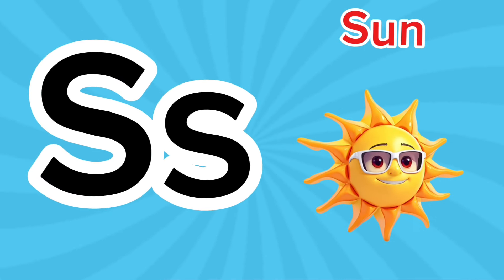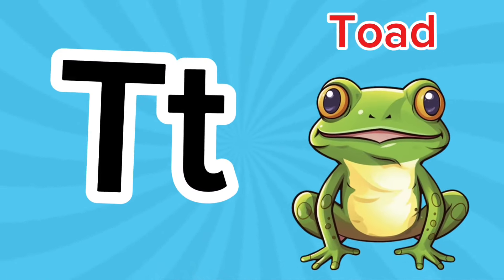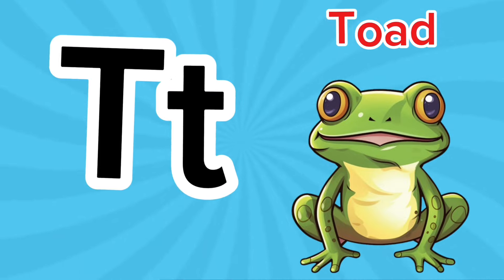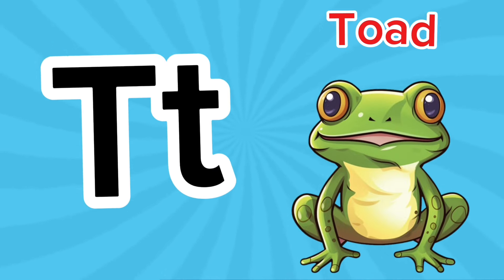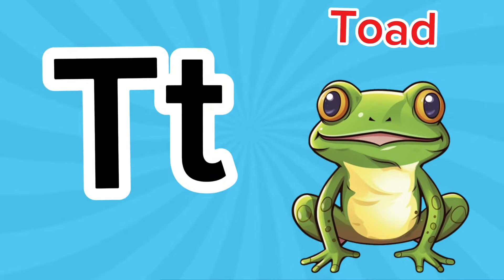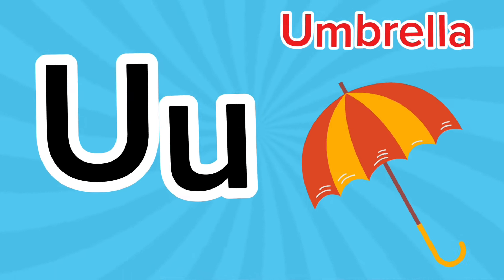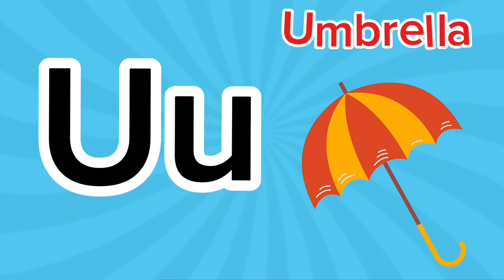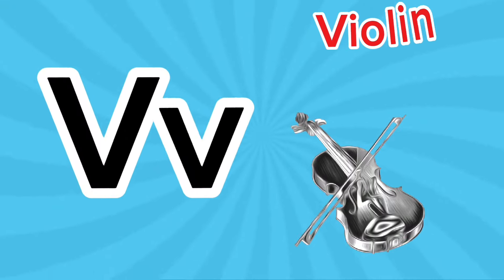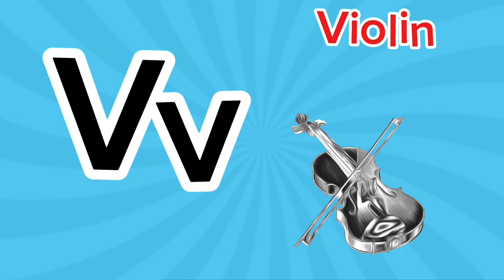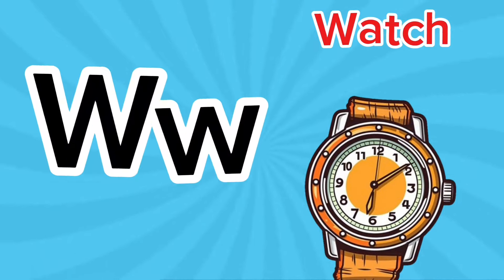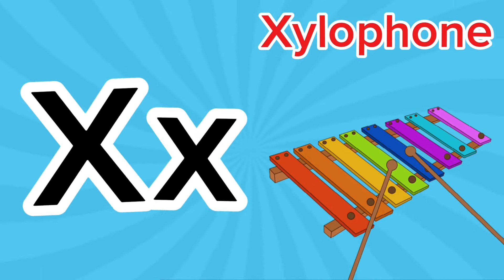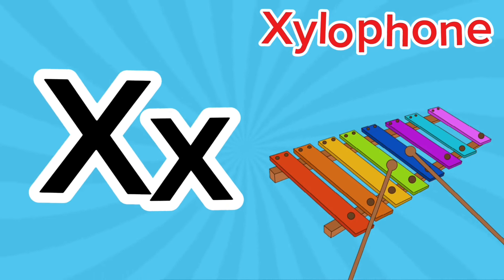S is for sun, s-s-sun. T is for toad, t-t-toad. U is for umbrella, u-u-umbrella. V is for violin, v-v-violin. W is for watch, w-w-watch. X is for xylophone, x-x-xylophone.